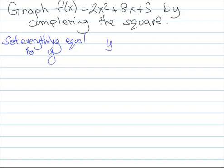So we've got y equals 2x squared plus 8x plus 5. And now we want to get x's by themselves.